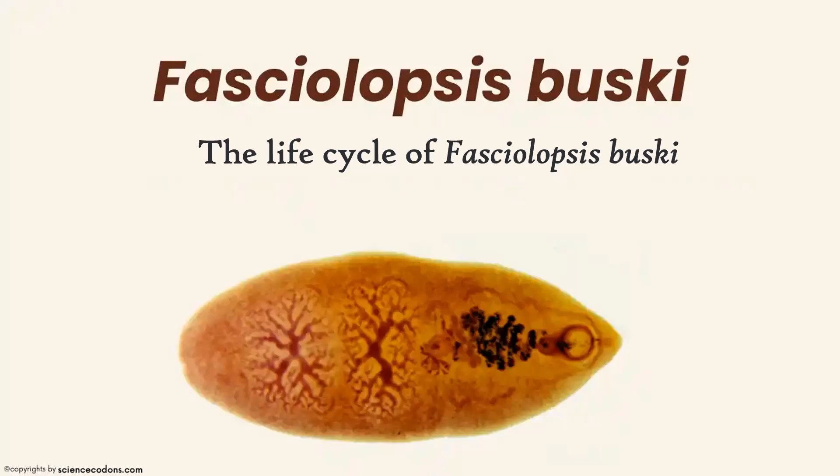Hello everyone, this is the Science Codons, and in today's video we are going to talk about the life cycle of Fasciolopsis buski. Fasciolopsis buski is a leaf-shaped worm or trematode that enters and inhabits the human intestine. Due to its size, it is often referred to as the giant intestinal fluke.